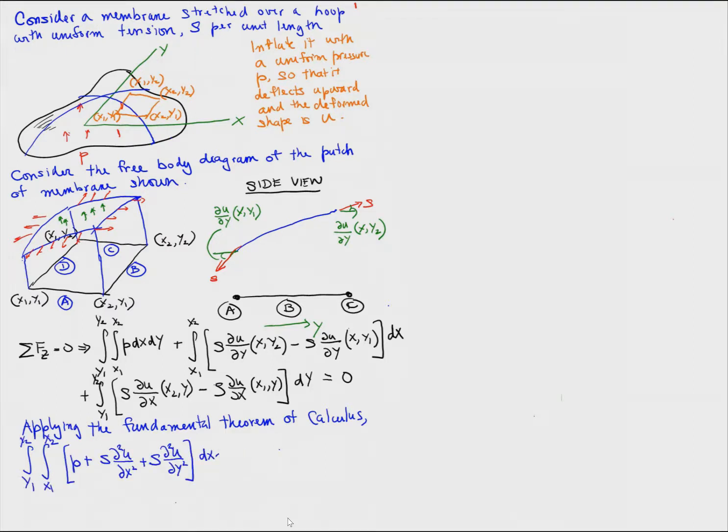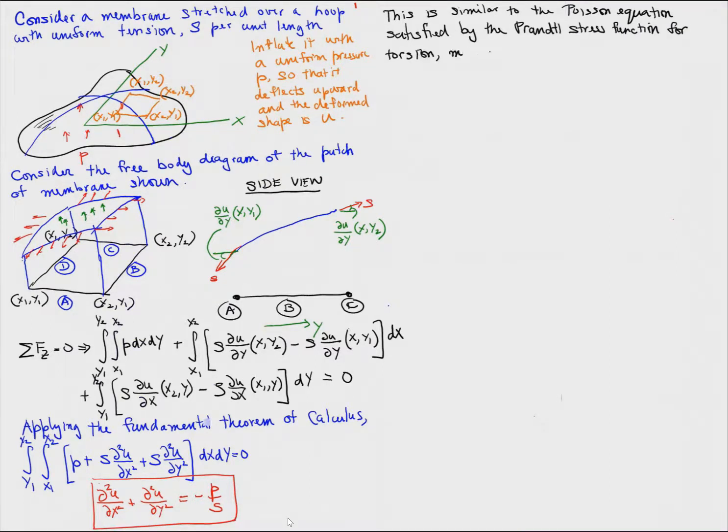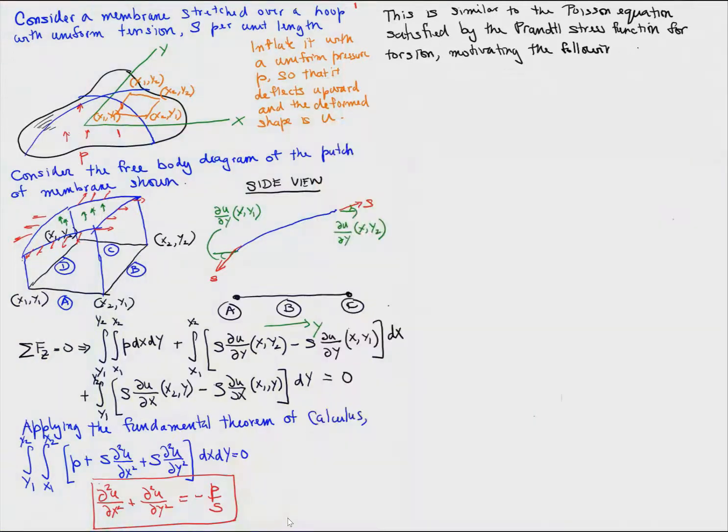then we get the integral from X1 to X2, integral Y1 to Y2, P plus S D squared U over DX squared, plus S D squared U over DY squared, DX DY equals zero. And because our patch was arbitrary, we get that the deflection of the membrane satisfies a similar Poisson's equation to that satisfied by the Prandtl stress function for torsion.